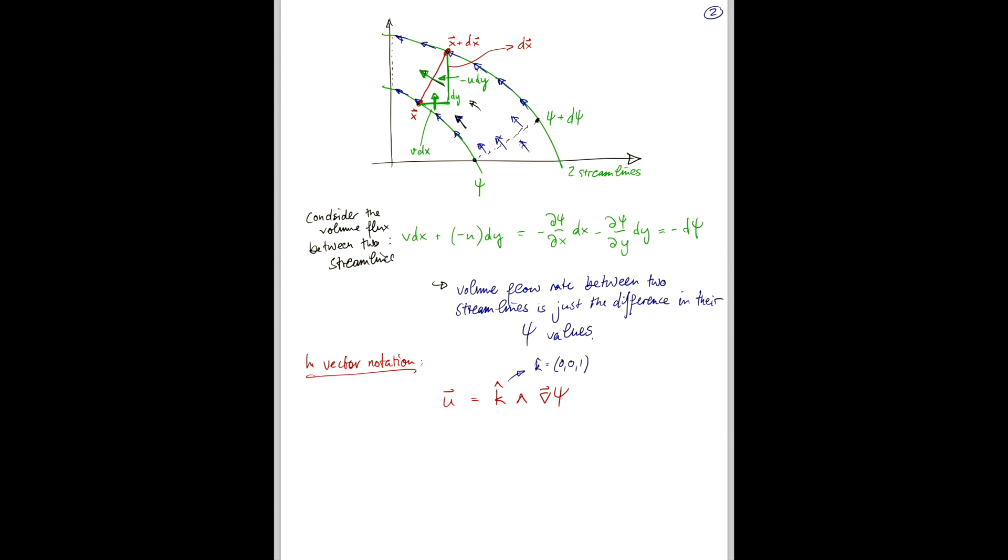Let's show that this really is the same as what we found earlier using index notation. So, if we have, in general, u is the cross product of two vector fields a and b, then we've shown in index notation that this is just epsilon ijk a j b k from back in the tensor chapter.